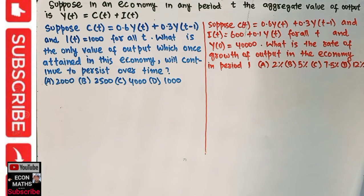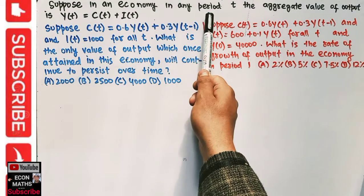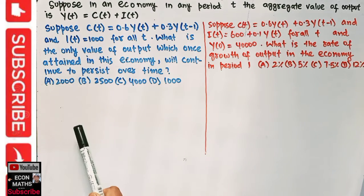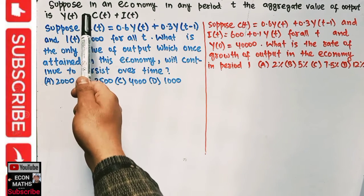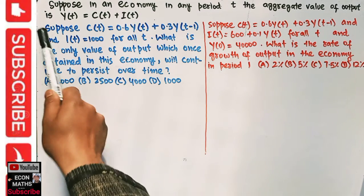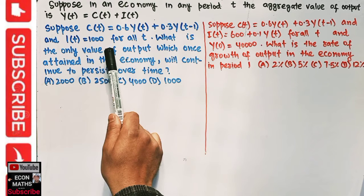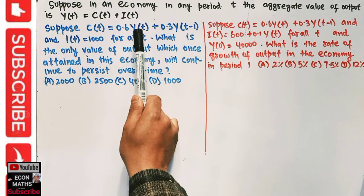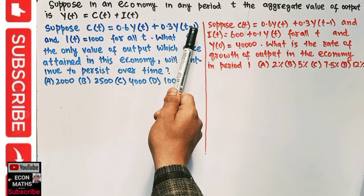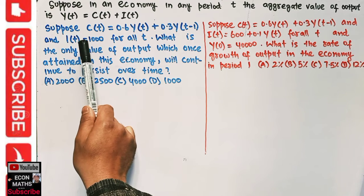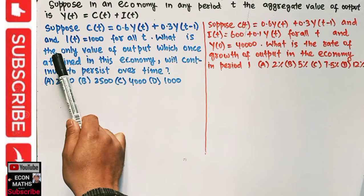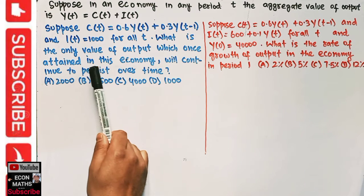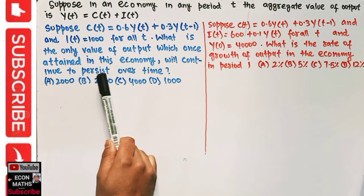In this video we will solve a numerical problem asked on the Telegram channel of economics. The question is: suppose in an economy in any period t, the aggregate value of output is given as Yt = Ct + It, meaning output equals the sum of consumption plus investment. Suppose consumption at period t is equal to 0.6Yt + 0.3Y(t-1), and investment at time period t is equal to 1000 for all t. What is the only value of output which will persist in this economy over time?